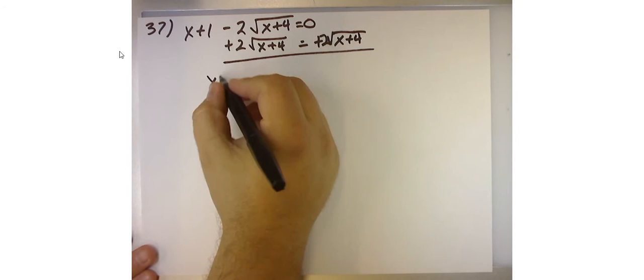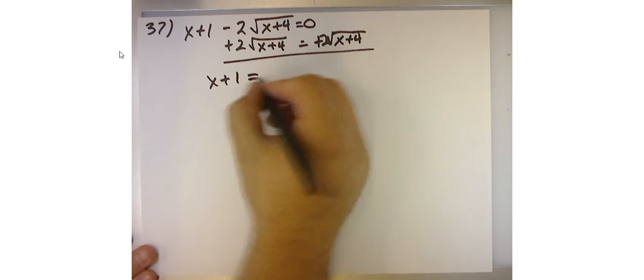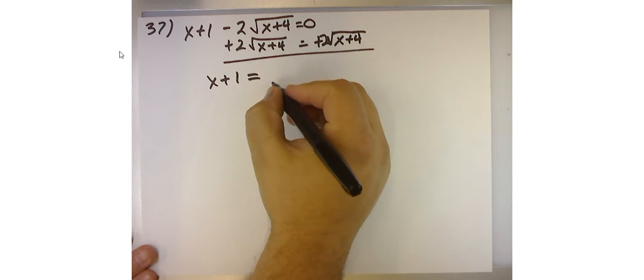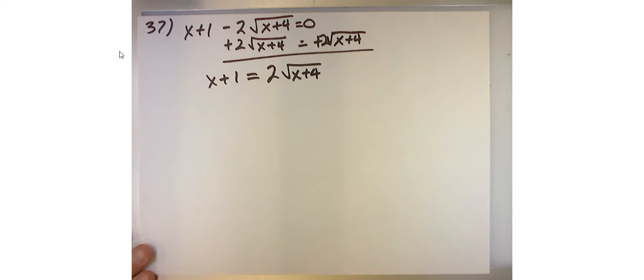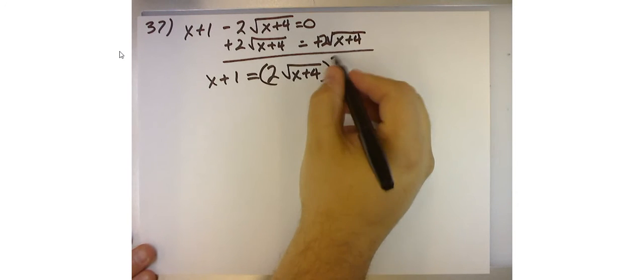Because the square root is causing us issues here. So I get x+1 = 2√(x+4). That square root symbol is giving me problems, so I'm just going to get rid of it by squaring everything.